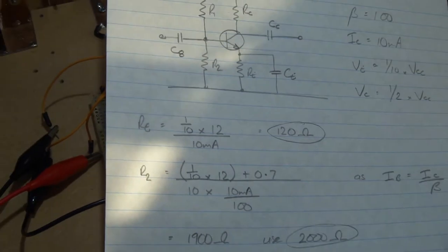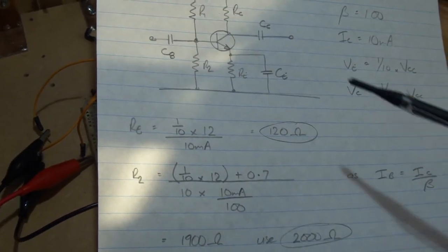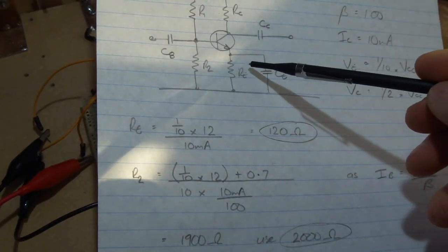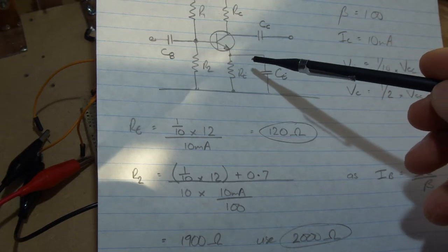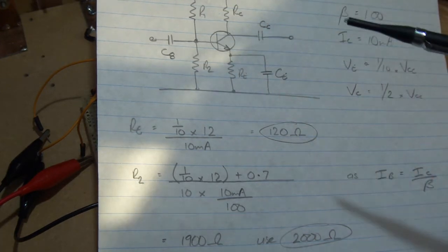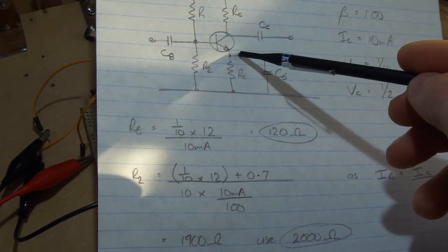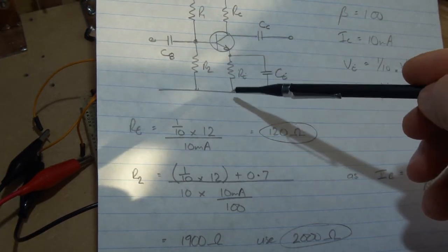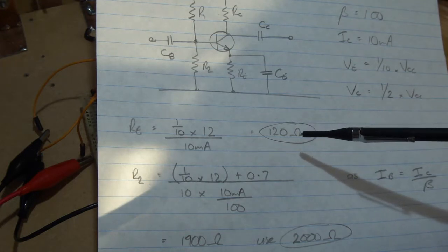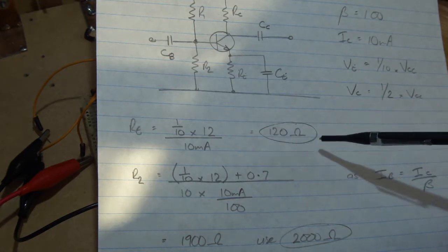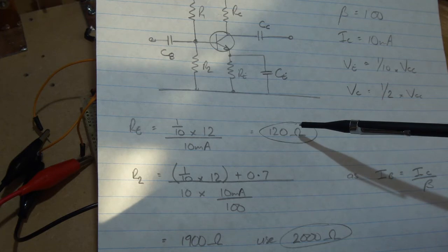So in terms of the circuits, the maths. So the first part, we're working out the emitter resistor. So for that it's just Ohm's law. So we've got a tenth times 12 volts here or 1.2 divided by 10 milliamps, we get 120 ohms. 120 ohms is a standard value resistor, so we'll just use that one.